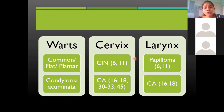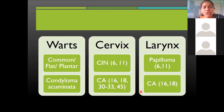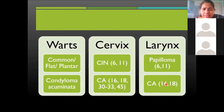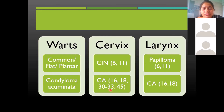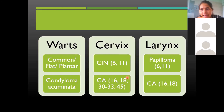For carcinoma of the cervix and laryngeal carcinoma, strains 16 and 18 lead to cancerous invasive lesions. For cervical carcinoma there are other strains as well — 31, 33, 45 — but they are less common. Strains 16 and 18 are the most important for both cervix and larynx.